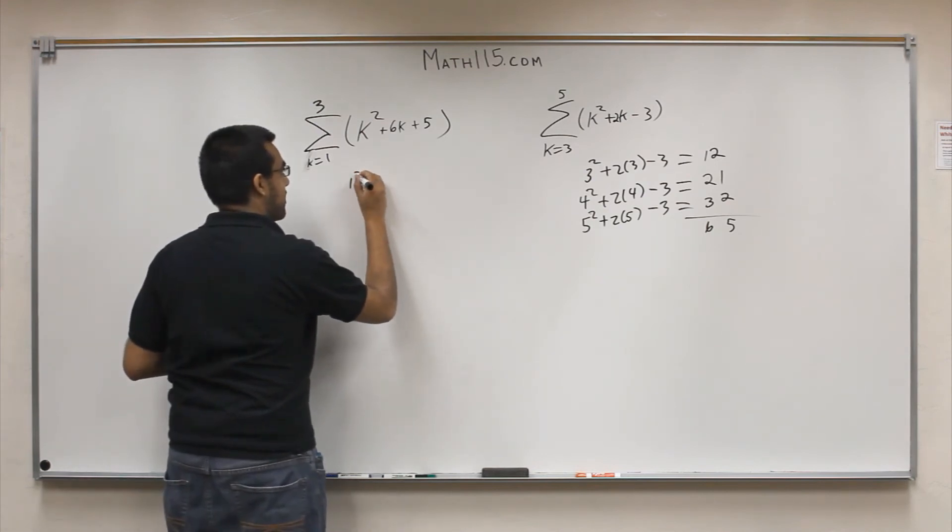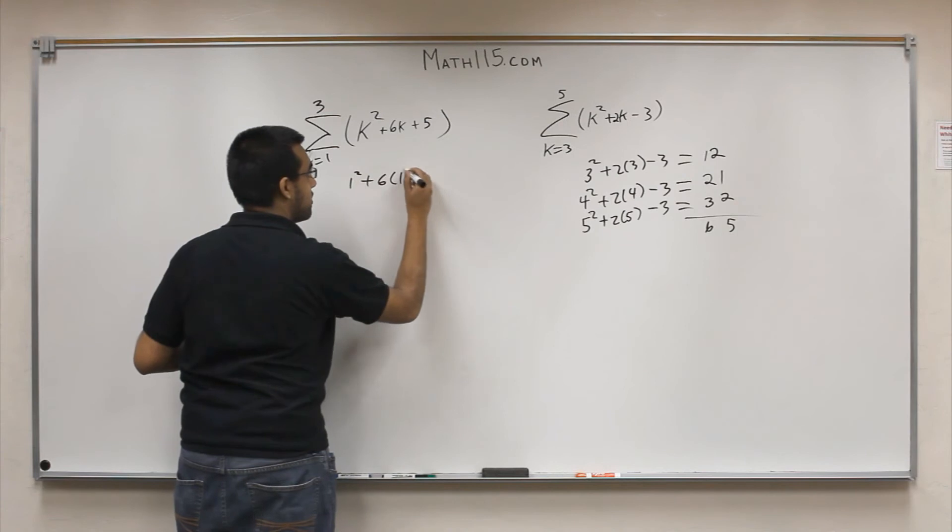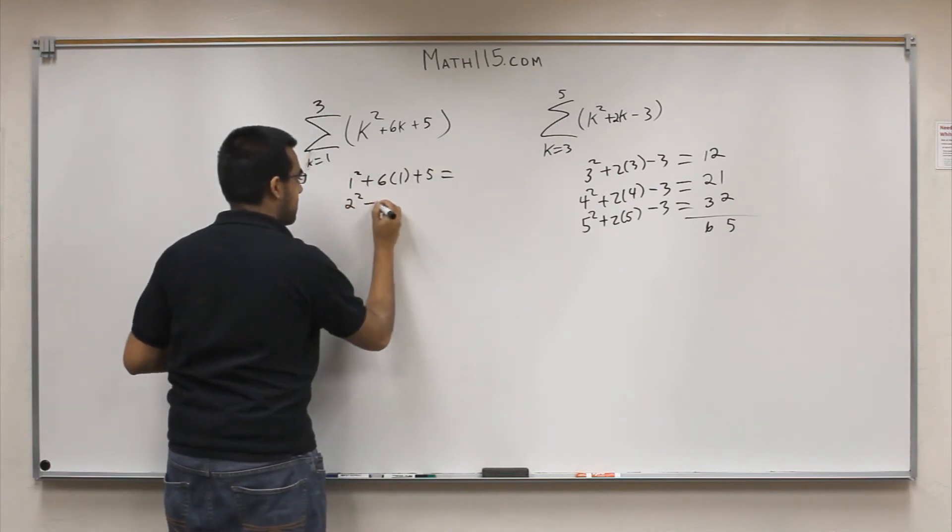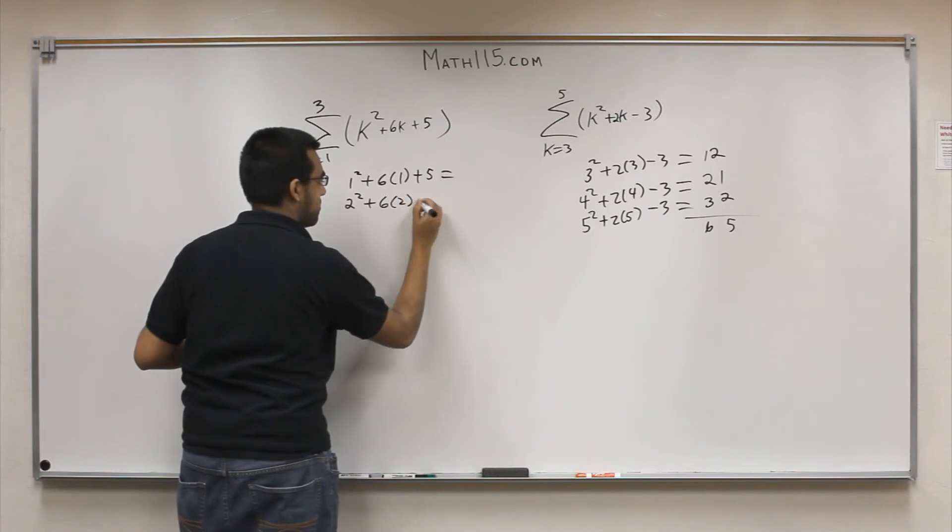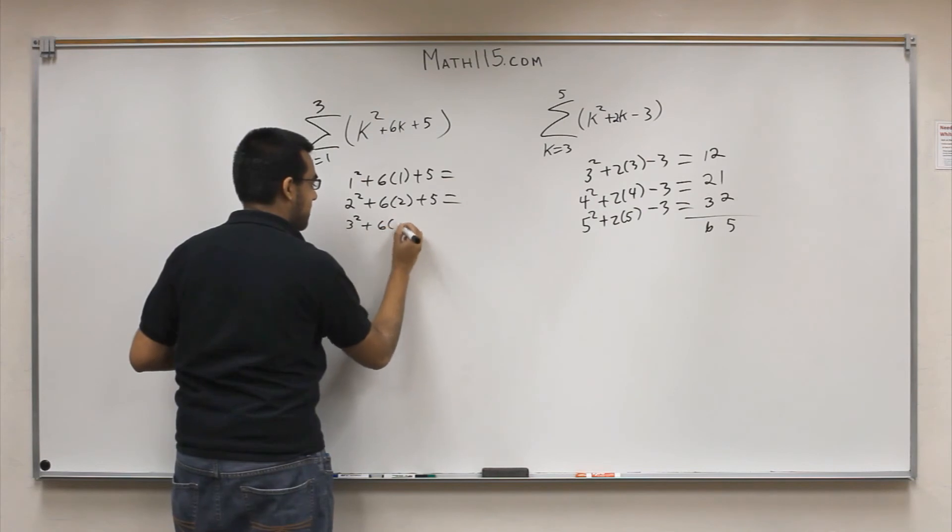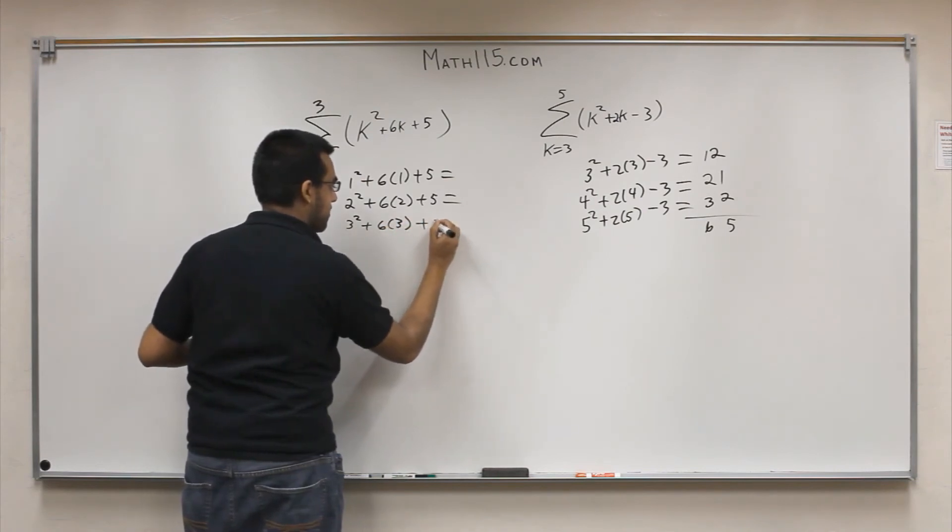So we're going to get 1 squared plus 6 times 1 plus 5. We're going to get 2 squared plus 6 times 2 plus 5. And finally 3 squared plus 6 times 3 plus 5.